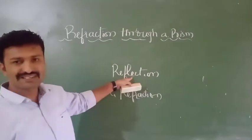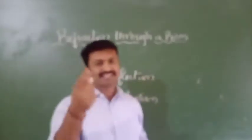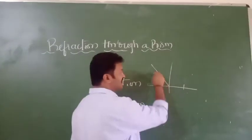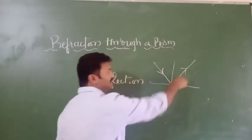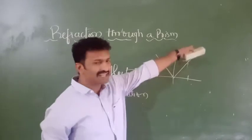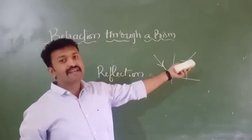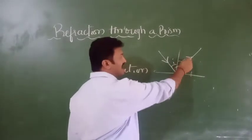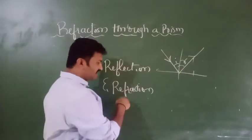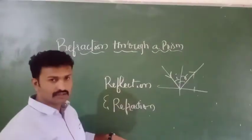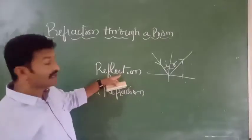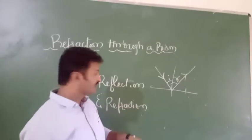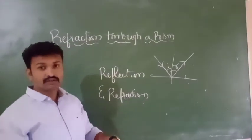Reflection means the ray bounces back in the same medium, where the angle of incidence equals the angle of reflection (i = r). Refraction is different from reflection — reflection happens in only one medium, whereas refraction takes place across two media.